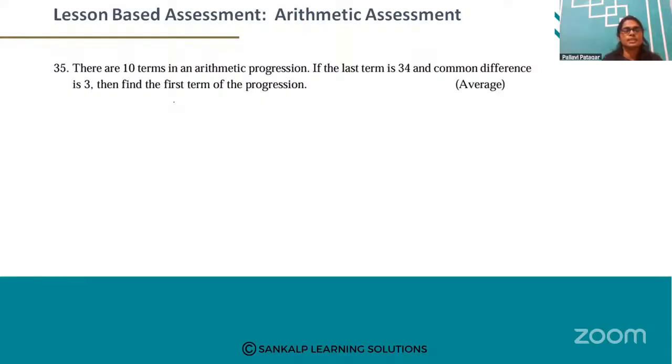Here, the nth term a_n is equal to a plus (n minus 1) into d. So here n, there are 10 terms, n is equal to 10. a_n is equal to 34, and the common difference d is 3.